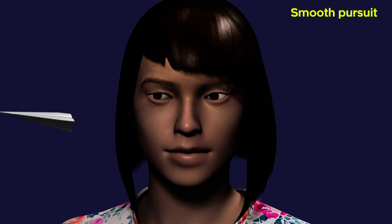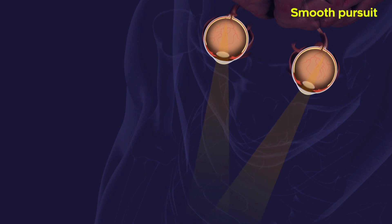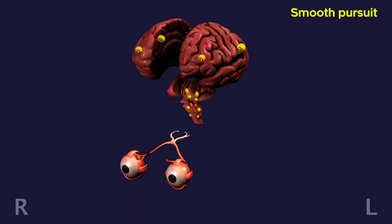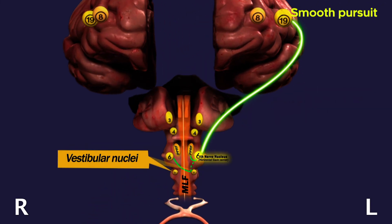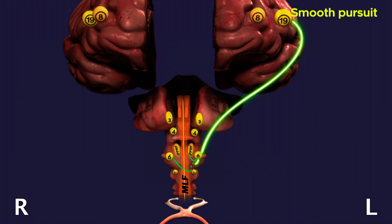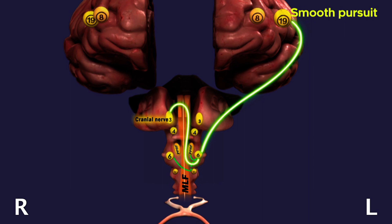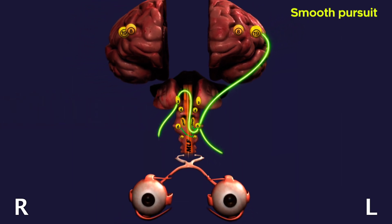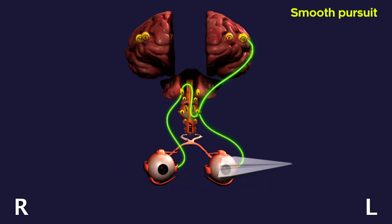Smooth pursuits hold the image of a small moving target on the fovea. For the initiation of horizontal pursuit to the left, supranuclear inputs originate from the left parieto-occipital lobe and descend to the left sixth cranial nerve nucleus. From there, impulses travel via the medial longitudinal fasciculus to the right third cranial nerve nucleus, causing stimulation of the left lateral rectus and right medial rectus, resulting in smooth pursuit movements to the left.